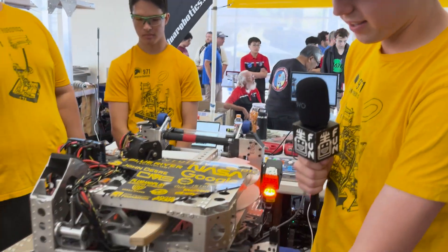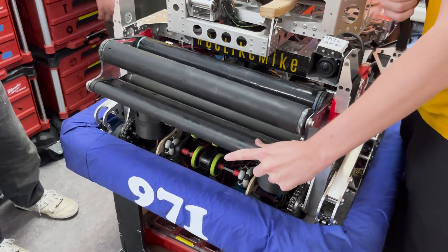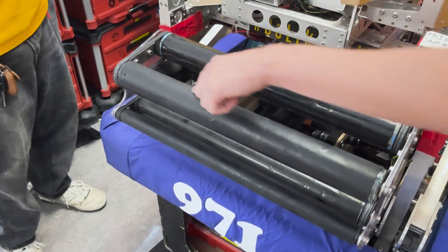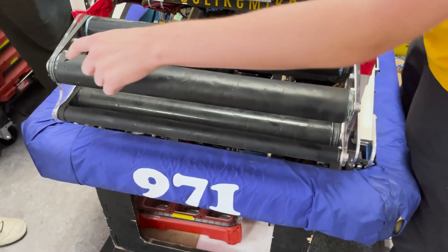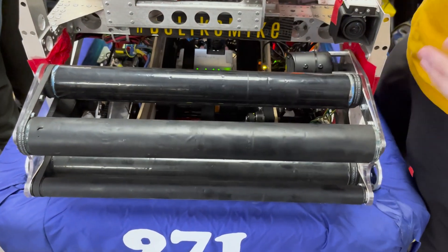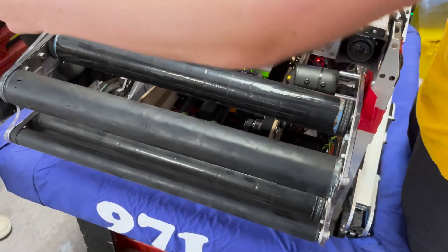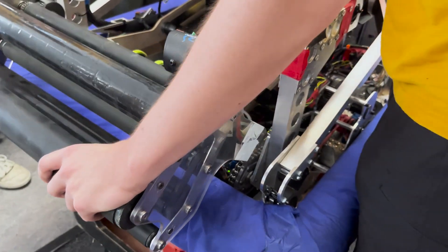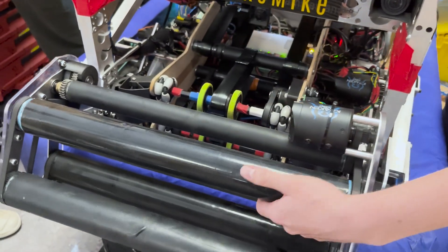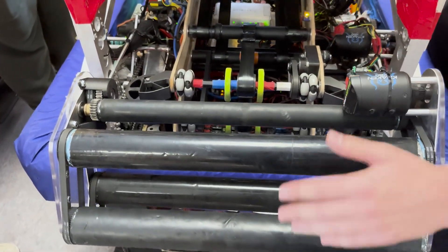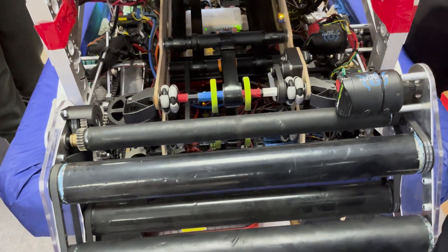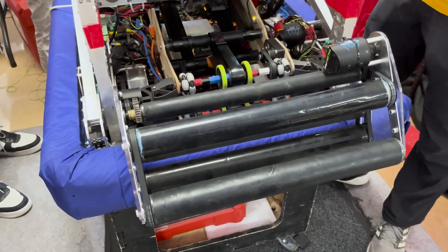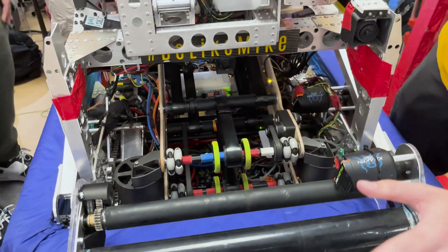Moving on, we have our intake here. It's an over-the-bumper intake. We used these polycarbonate rollers, covered it in silicone rubber as the rollers. For the hubs, we custom made these 3D printed hubs that we can easily just screw on to the side here and hot-swap them easily whenever something breaks. We thought over-the-bumper intake would be easier for a tank drivetrain, even though most people did under-the-bumper this year.